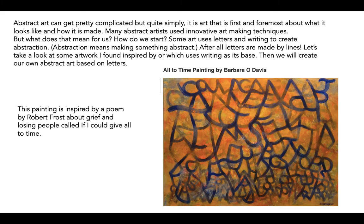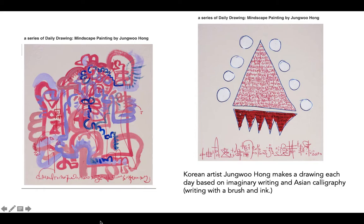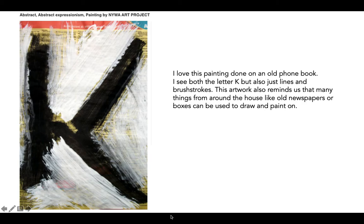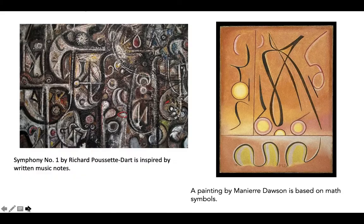Then we will create our own abstract art based on letters. This poem painting, All to Time Painting by Barbara O. Davis, was inspired by a poem by Robert Frost about grief and losing people called If I Could Give All to Time. These are part of a series of daily drawings by a Korean artist named Jung Woo Hong, who makes drawings based on imaginary writing and Asian calligraphy — writing done with a brush and ink. I love this painting because it's painted on an old phone book. I see both the letter K but also just lines and brush strokes. This artwork also reminds us that many things from around the house like old newspapers or boxes can be used to draw and paint on.